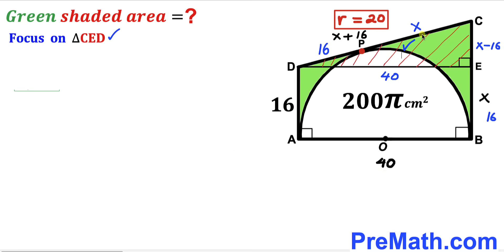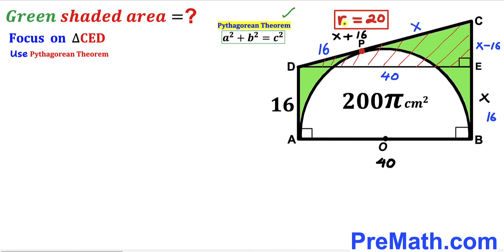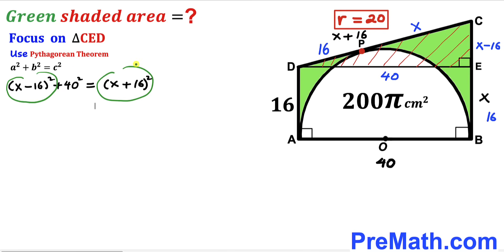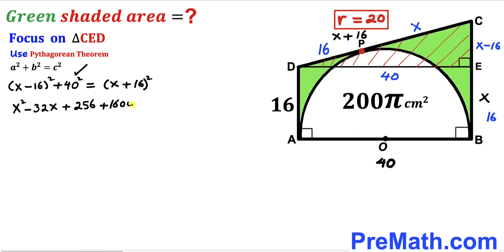Now let's apply the Pythagorean theorem to right triangle CED. The hypotenuse is x + 16, and the two legs are x − 16 and 40. So: (x − 16)² + 40² = (x + 16)². Expanding gives x² − 32x + 256 + 1600 = x² + 32x + 256.